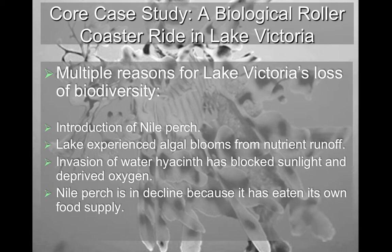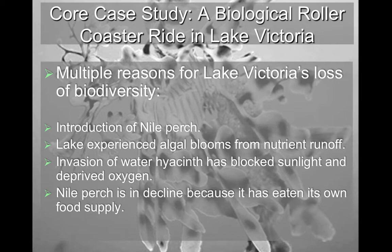There are multiple different reasons for the loss of biodiversity. The lake also secondarily experienced something called algal blooming, from a process called eutrophication, which occurs when nutrients end up running into the water. The algae have a huge nutrient source to feed on, and when the algae dies after consuming all its nutrients, it ends up blocking sunlight and being degraded by bacteria and microorganisms that cause dead zones — loss of oxygen in those regions. We also have the water hyacinth, an invasive species that has also blocked sunlight and deprived oxygen for the waters below.